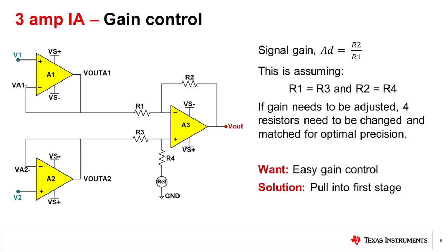We would like the flexibility of easily and quickly altering the gain depending on our input and output expectations and requirements. The solution here is to pull the gain control into the first stage. We'll see how this is done next.